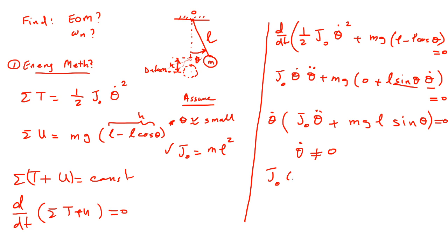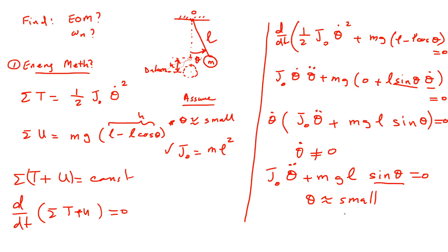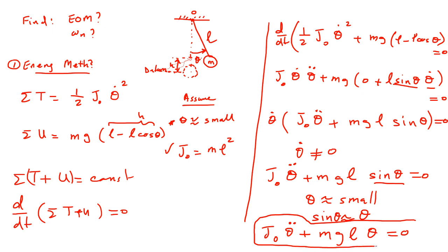So: J_O theta-double-dot plus MGL sine theta equals zero. Remember theta is small? That means we can linearize this. How do we linearize sine theta? If theta is small, sine theta is approximately equal to theta. So the equation of motion becomes: J_O theta-double-dot plus MGL theta equals zero. This is the equation of motion.